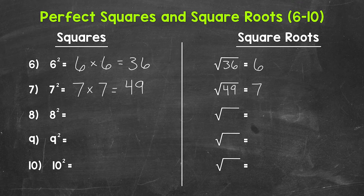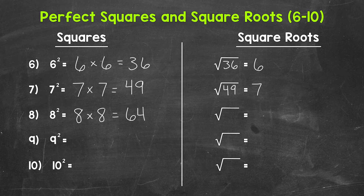Let's move on to number eight, where we have eight squared. That means eight times eight, which equals 64. So eight squared equals 64, and that means the square root of 64 equals eight.